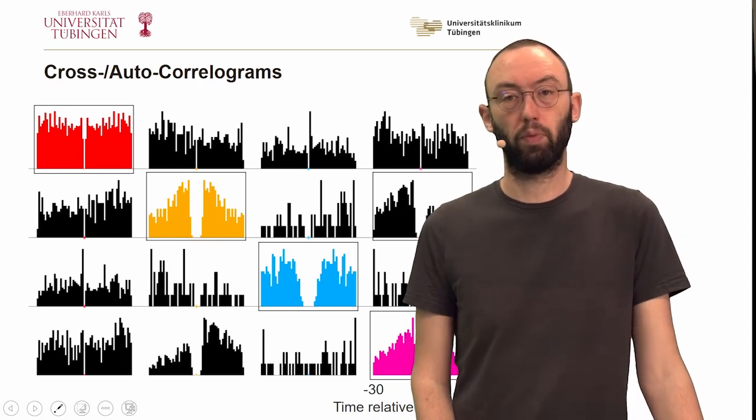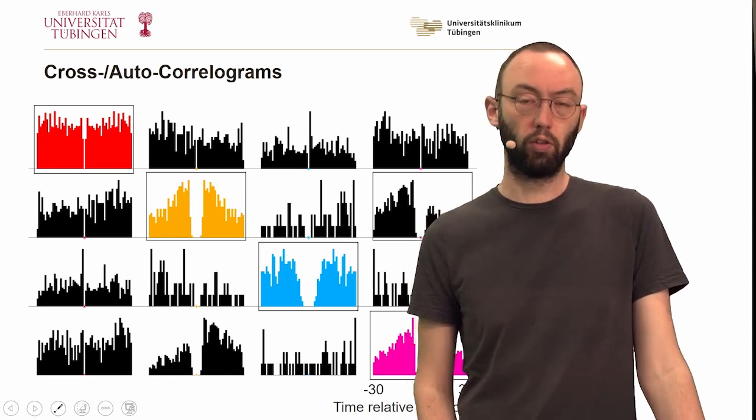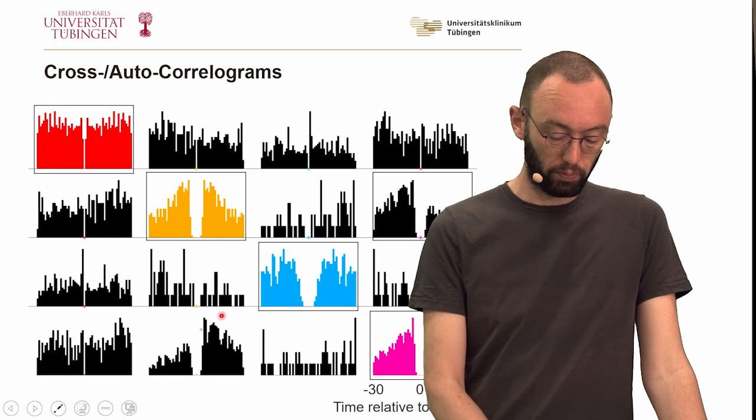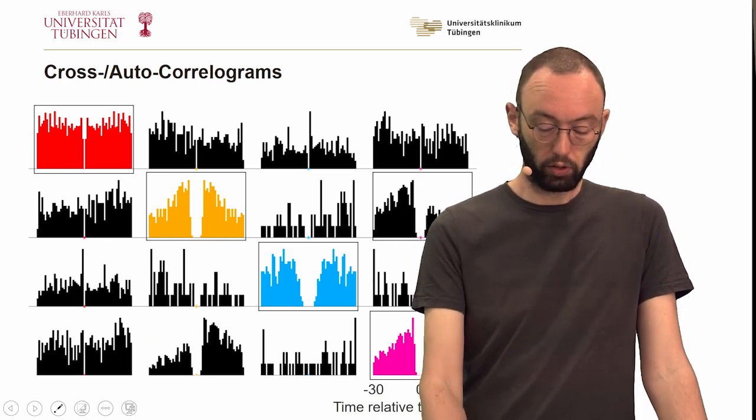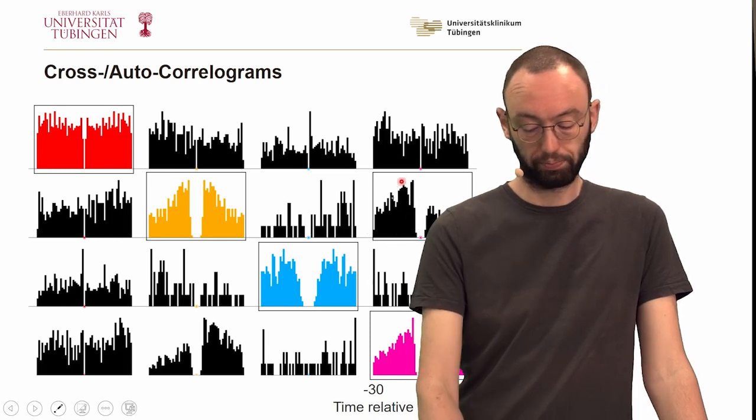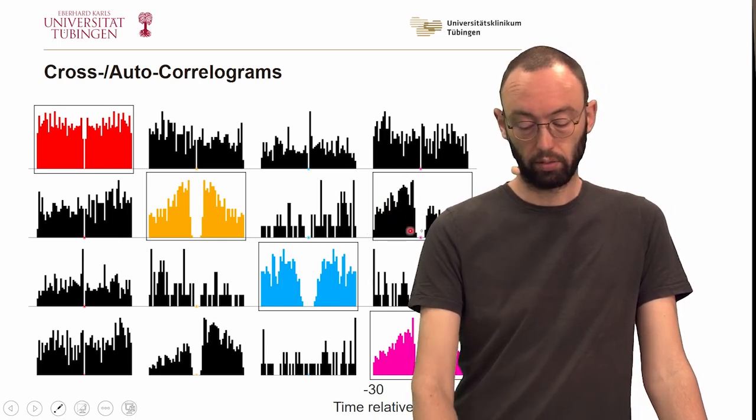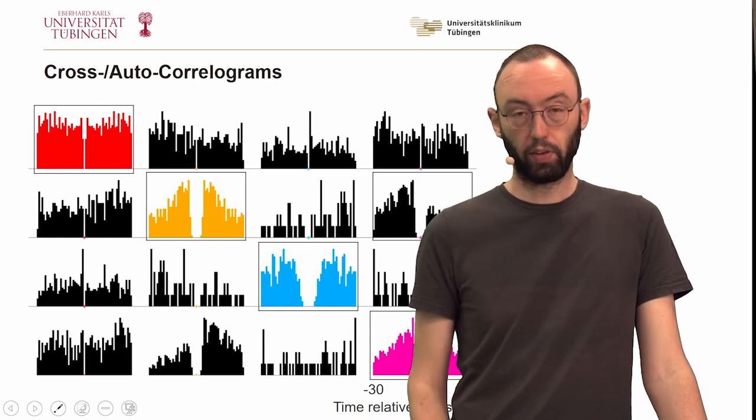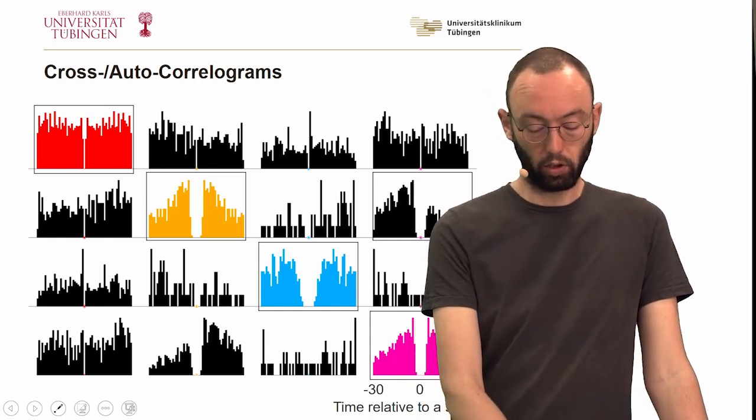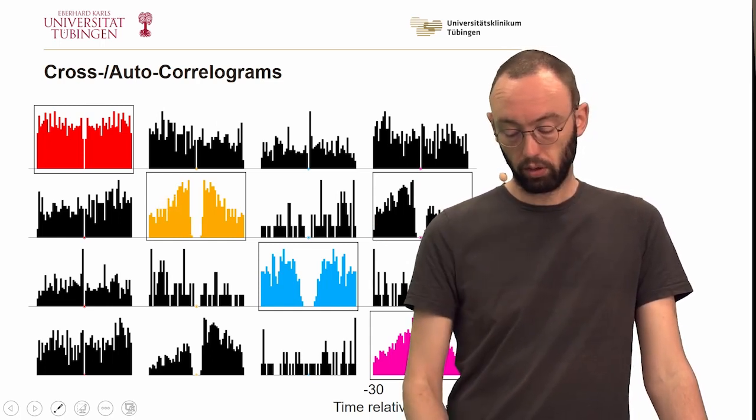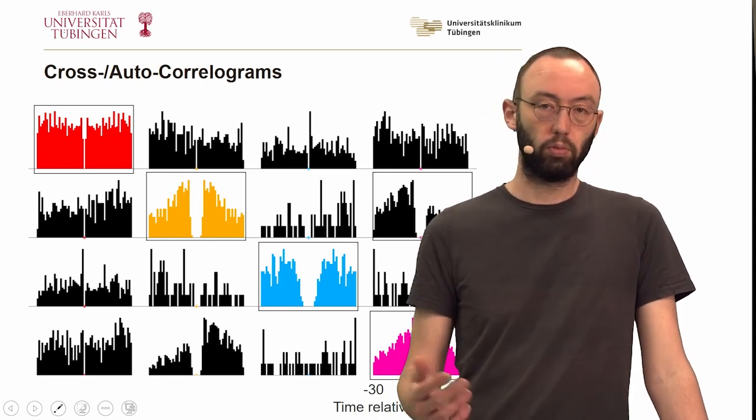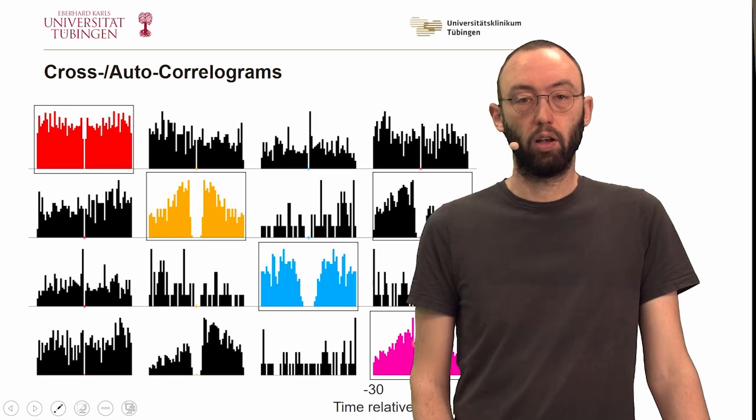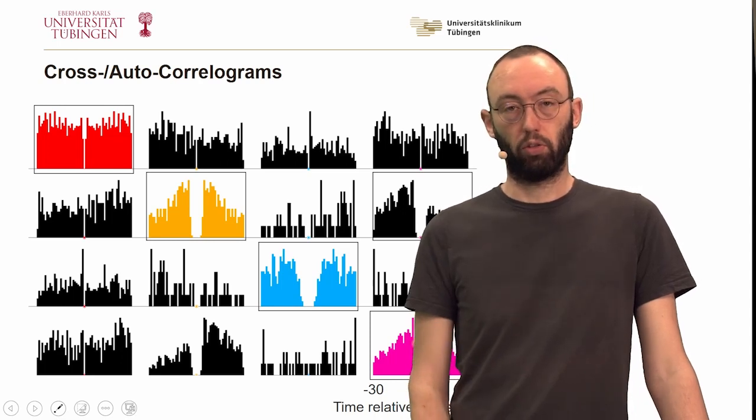We can even form a further hypothesis for what kind of spikes they are, because the cross-correlogram is slightly asymmetric. The pink cross-correlogram has a higher peak on the left side, indicating that the orange cluster typically fires before the pink cluster. So this might be a sign of spike amplitude adaptation over time.